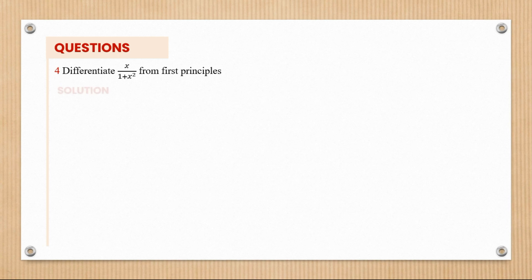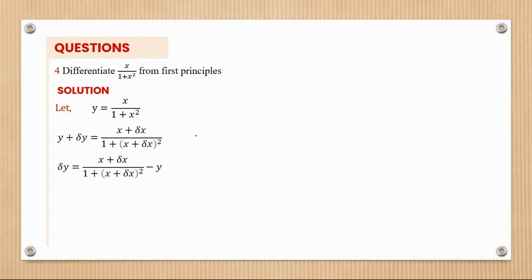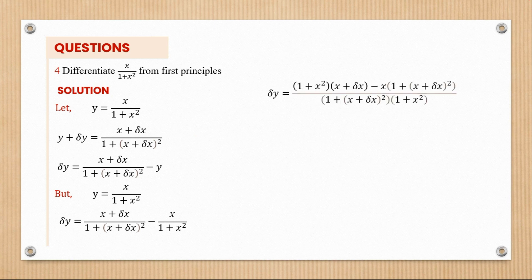For question four, we differentiate x over (1 plus x squared) from first principles. We let y equal x over (1 plus x squared). Where there is y we introduce y plus Δy, and where there is x we introduce x plus Δx — both in the numerator and the denominator. Taking y to the right side and substituting y equals x over (1 plus x squared), we then find the LCM of the denominators, which gives the combined expression.